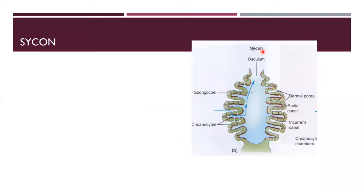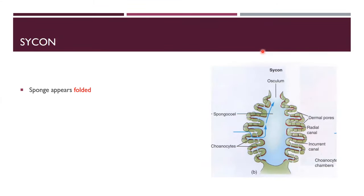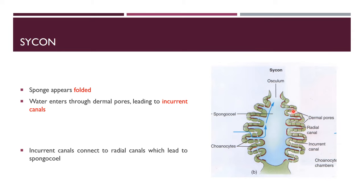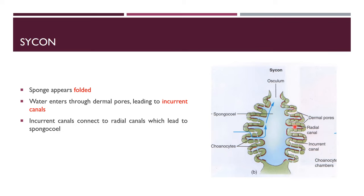The second body form is sycon. The body wall is folded and water enters through dermal pores leading to incurrent canals, which connect to radial canals. From the radial canals, water moves to the spongocoel and then exits through the osculum.